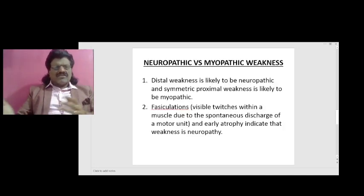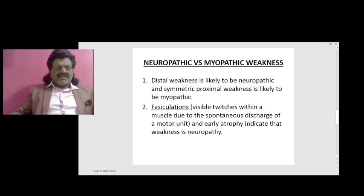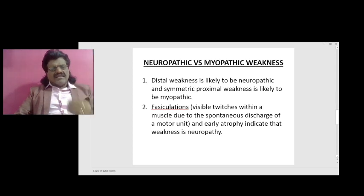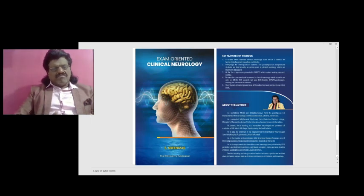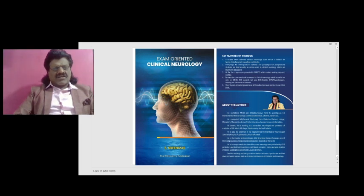Neuropathic versus myopathic weakness: distal weakness is likely to be neuropathic, and symmetric proximal weakness is likely to be myopathic. Fasciculation — the visible twitches within a muscle due to spontaneous discharge of a motor unit — and early atrophy indicate that the weakness is neuropathic. These are the important concepts of muscle stretch reflexes or tendon reflexes.